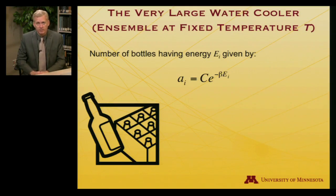Let me recap what we have talked about so far when it comes to our thought construct, the very large water cooler, or an ensemble at fixed temperature T if we want to use more sophisticated thermodynamics speak. What we determined was that the number of bottles in our large water cooler having an energy e sub i is given by: the number is a, a constant that we have yet to determine, e to the minus beta, another constant we have yet to determine, times that energy.